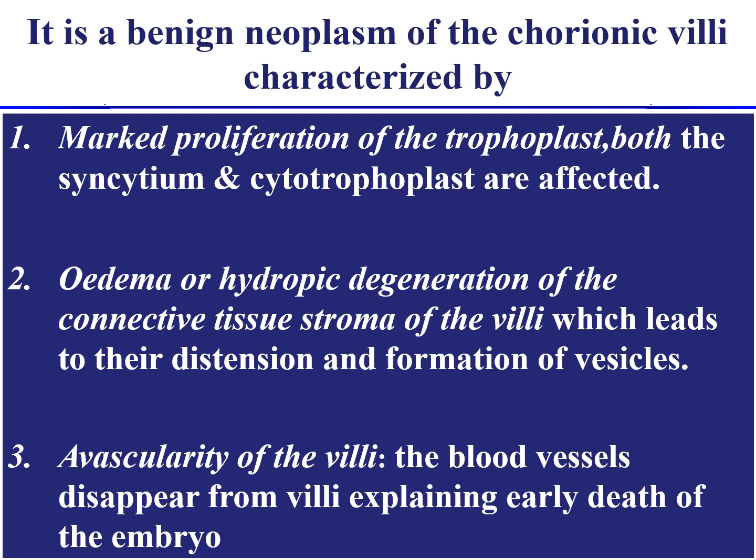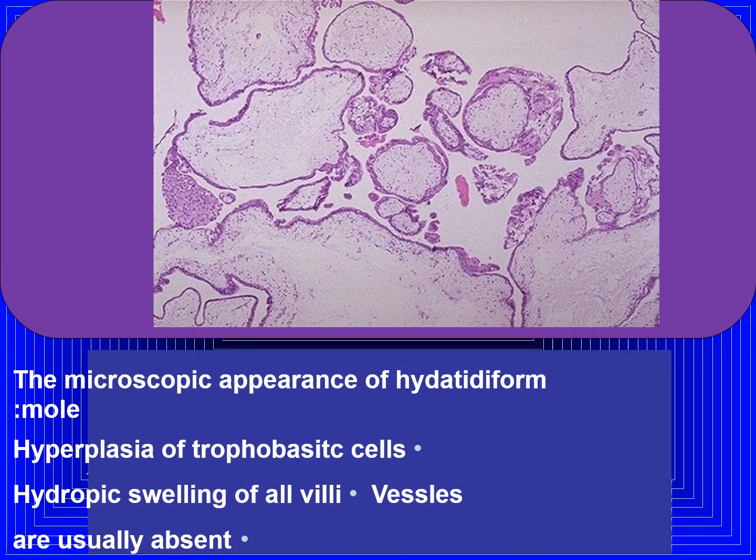The placenta contains villi, and edema with hydropic degeneration of the villi will occur, leading to distension and formation of vesicles — the villi become vesicles. Avascularity of the villi then occurs; blood supply to the villi is cut off and the blood vessels disappear, explaining the early death of the embryo. Microscopically, hydatidiform mole shows hyperplasia of trophoblastic cells, hydropic swelling of villi, and absent blood vessels.